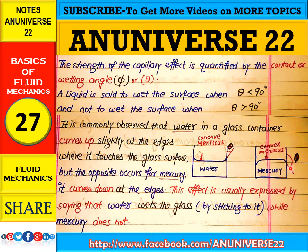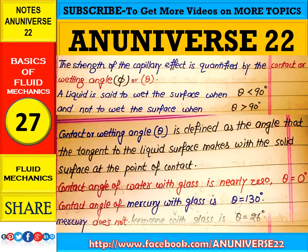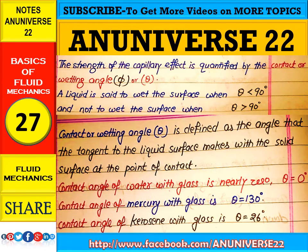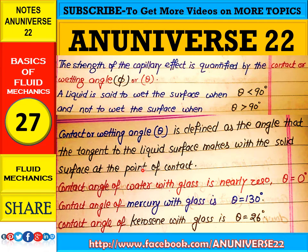In the case of mercury, theta is greater than 90 degrees. The contact angle or wetting angle is defined as the angle that the tangent to the liquid surface makes with the solid surface at the point of contact. It is denoted as theta or phi — either notation may be used.